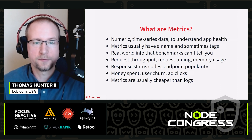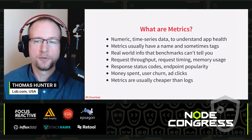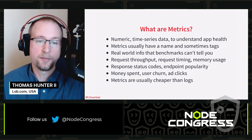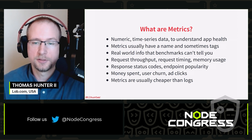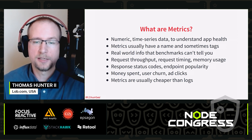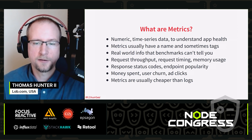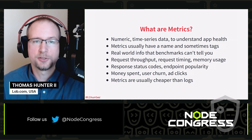It's common to store metrics for things like request throughput, request timing, application memory usage, status codes — 500s versus 200s — or endpoint popularity. You can even track business things such as money spent, user churn, or ad clicks. Generally, metrics end up being cheaper than logs, both in computational cost and transmission cost.